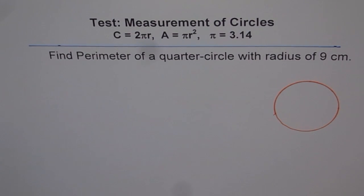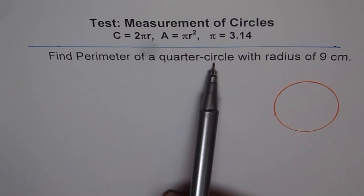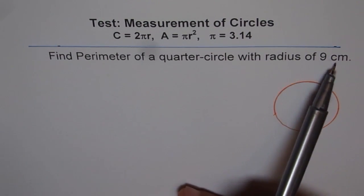Here is a test problem for you. You need to find perimeter of a quarter circle with radius of 9 cm.